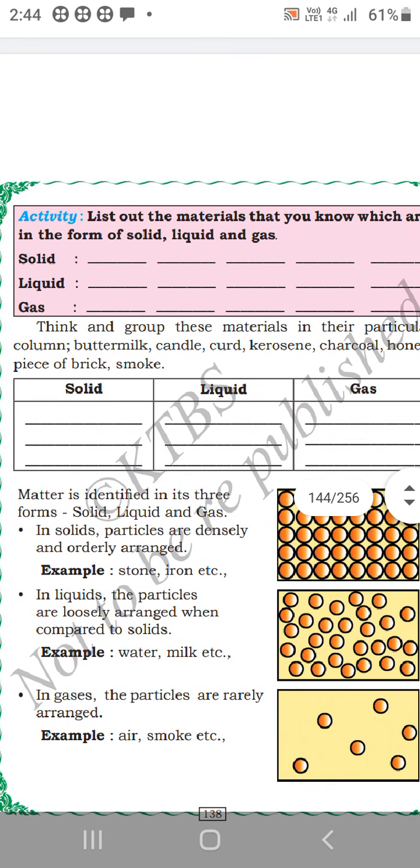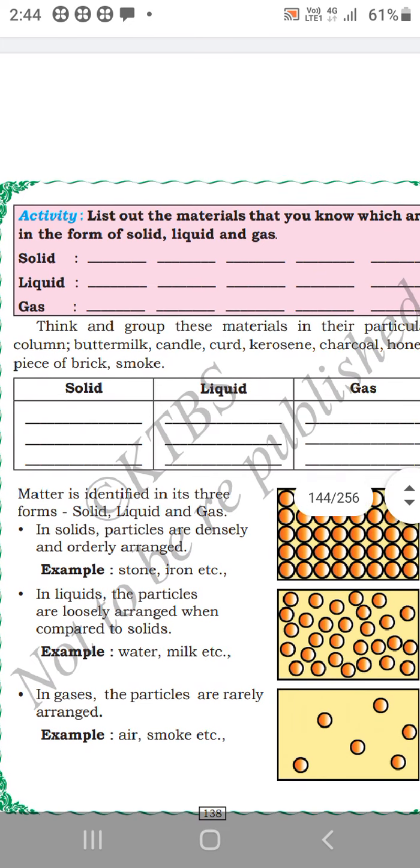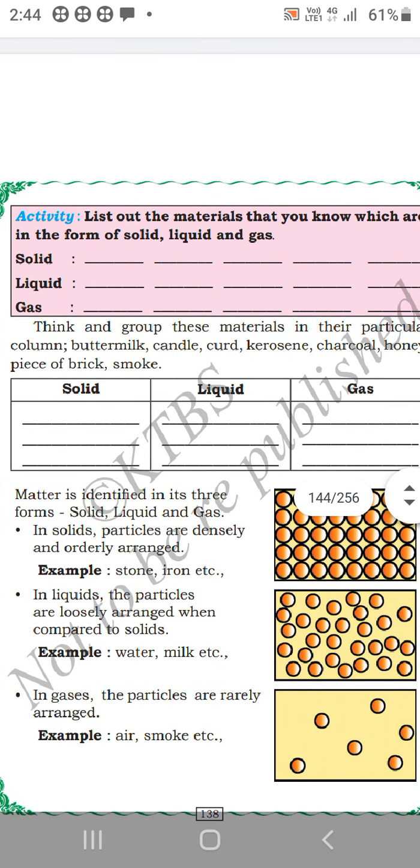Example: stone, iron. In liquids, the particles are loosely arranged when compared to solids. Water and milk. In gases, the particles are easily arranged. Air, smoke.